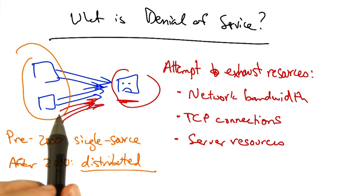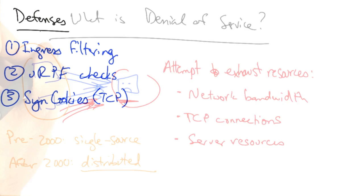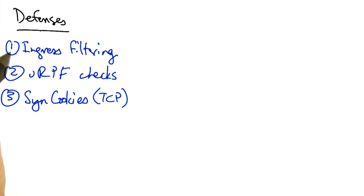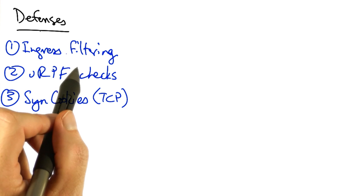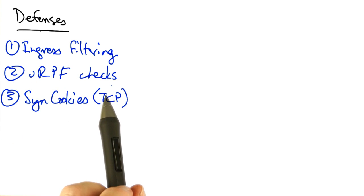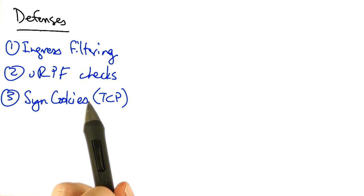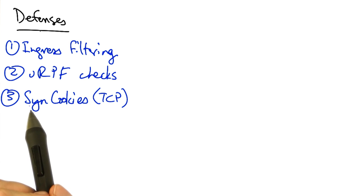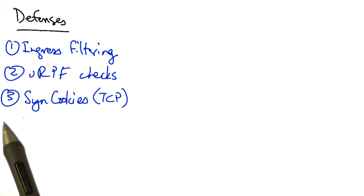Let's talk about three different types of defenses against denial of service attacks. First we have something called ingress filtering. Then we have something called URPF, or reverse path filtering checks. And then in the case of an attack on TCP connection resources, we can use something called TCP syn cookies to defend against denial of service.